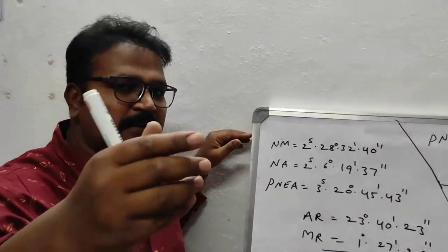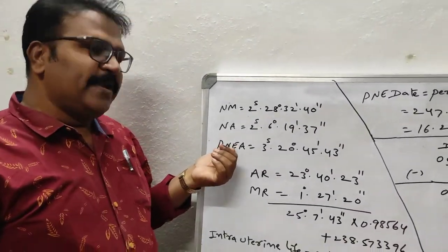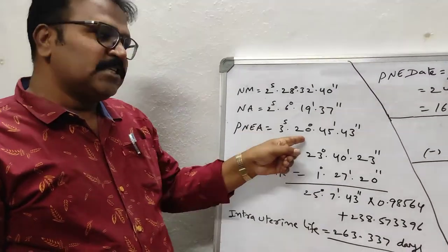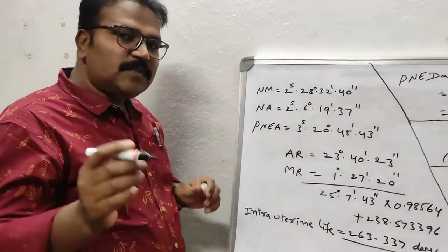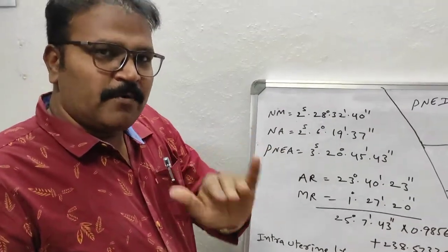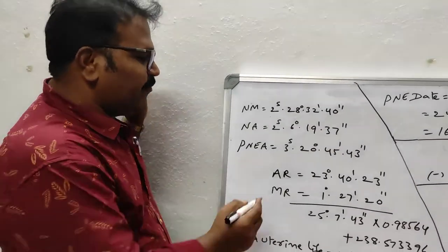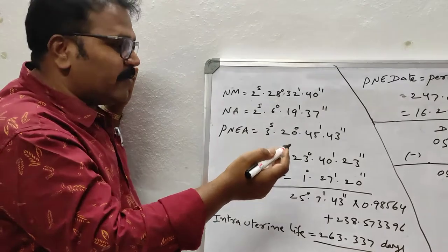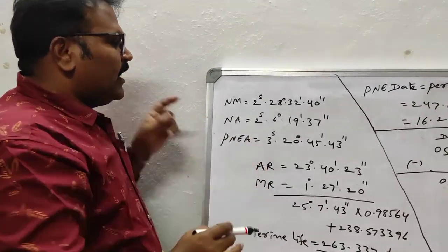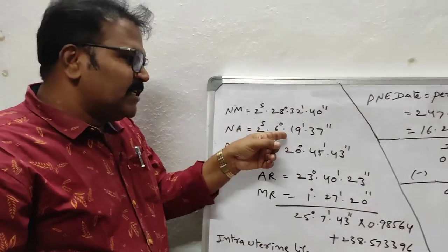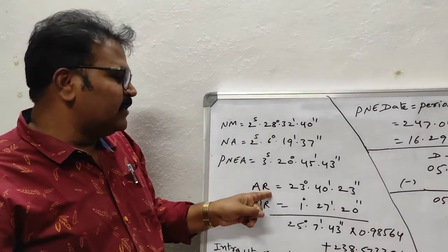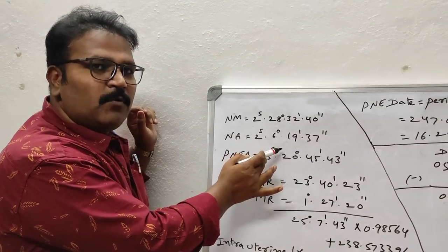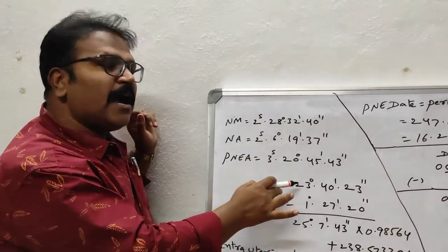I will explain how we can get the Pre-Natal Epoch Date. On that date, PNEA is the Pre-Natal Epoch Ascendant — not the birth date ascendant. Before finding the Pre-Natal Epoch Date, we have a small calculation. That is AR, which means Ascendant Remainder. To get AR, from 30 degrees, this ascendant degree should be subtracted. Then we get AR, the Ascendant Remainder.